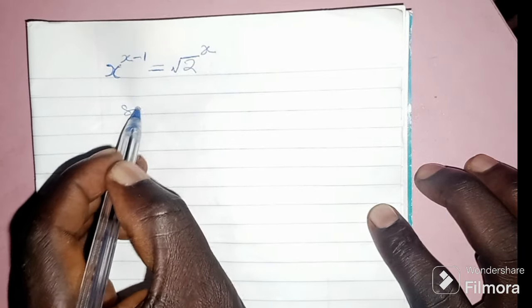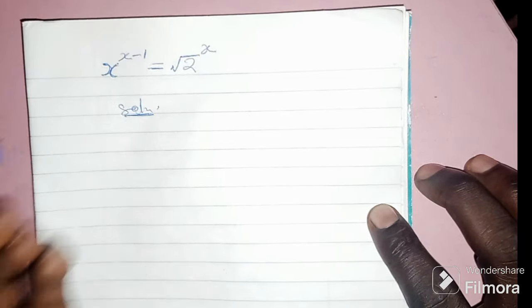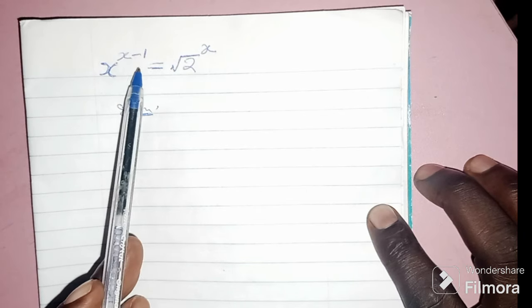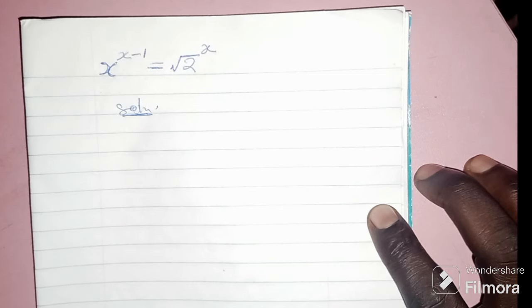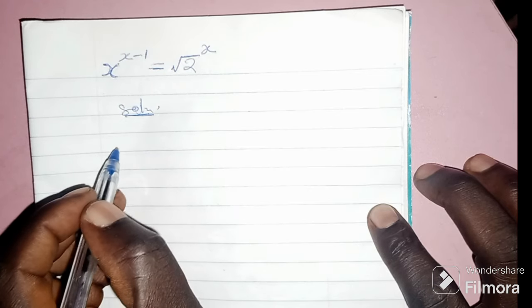Solution: in the first place I would like to multiply the powers of both sides by 1 over x, so as to take the unknown to one side.